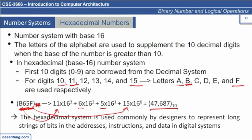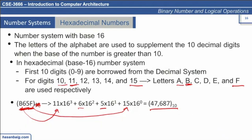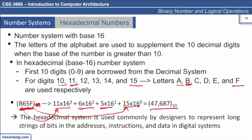I want to emphasize this because I foresee it will become problematic when you are required to convert or calculate a memory address or data represented in hexadecimal or binary. The hexadecimal system is commonly used by designers to represent a long string of binary digits in a compact form. If I were to represent a large value like 47,687 in binary, it would be a long string of ones and zeros, but I can represent it easily with just four hexadecimal digits.